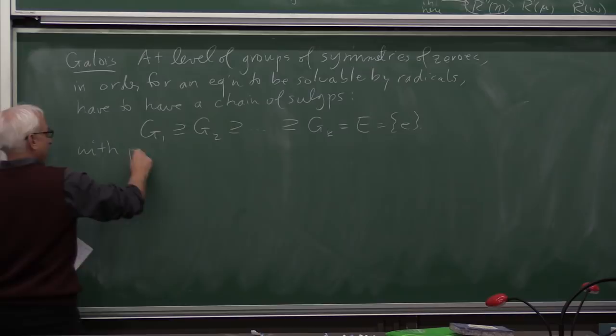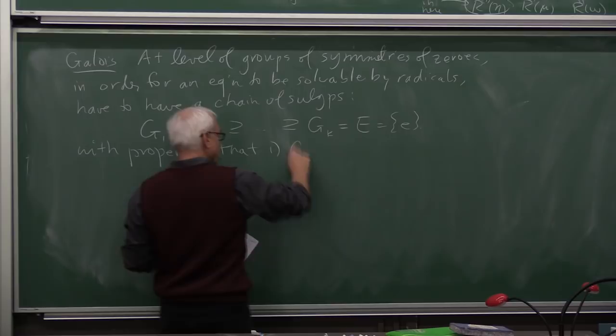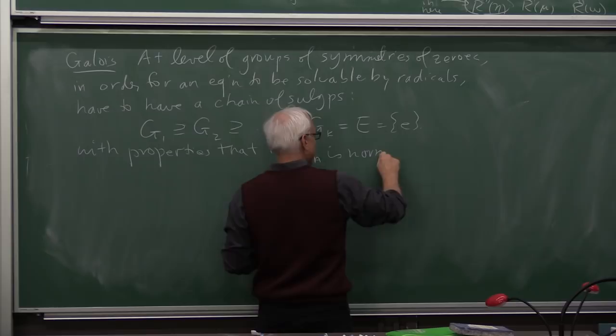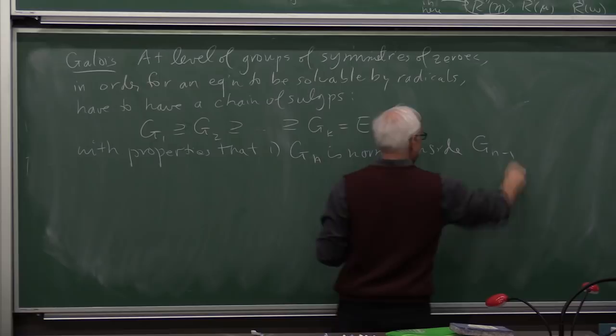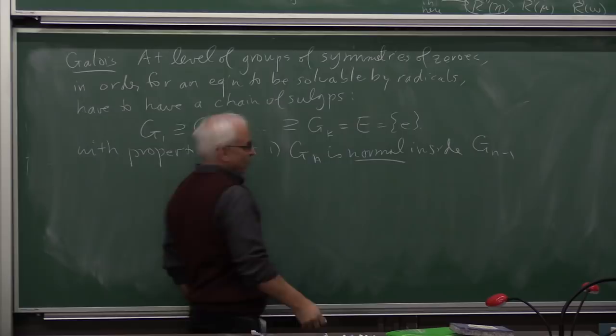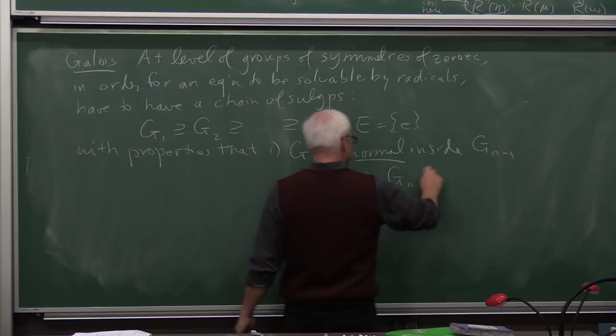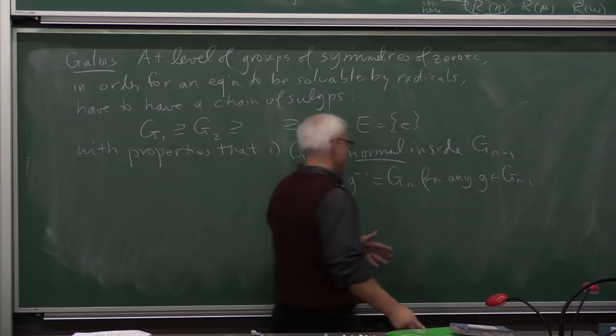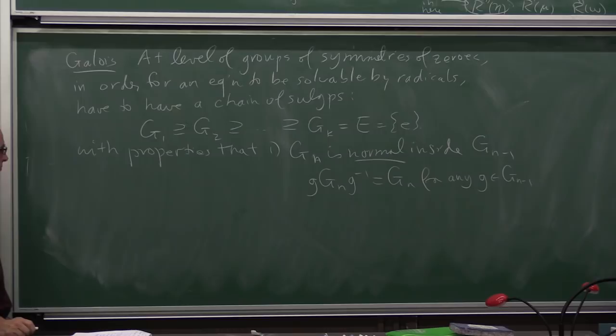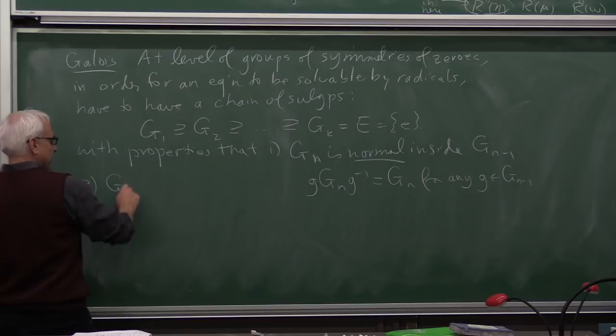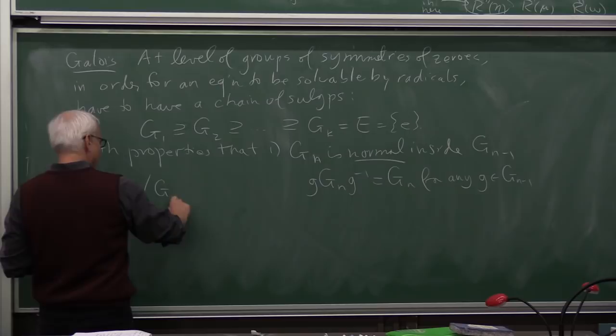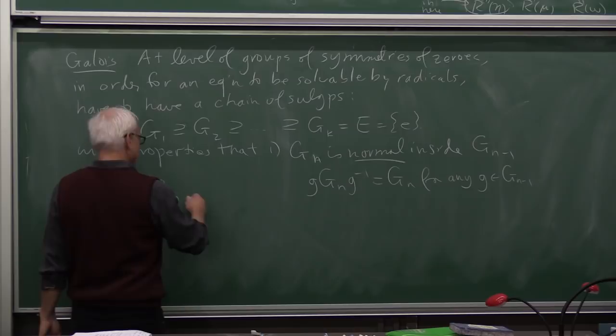All right so this is a very lightning quick introduction of Galois but this is a fundamental correspondence, the idea of groups and fields corresponding. And it's sort of in an inverse way so here as we're going in this direction the groups are getting smaller but the fields are getting larger. With this strategy so Galois realized that at the level of groups, groups of symmetries of zeros, in order for an equation to be solvable by radicals we have to have a chain, we have to have a chain of subgroups. Okay maybe I'll start on this side G1 and inside of that is G2 all the way up to Gk which is just the identity.